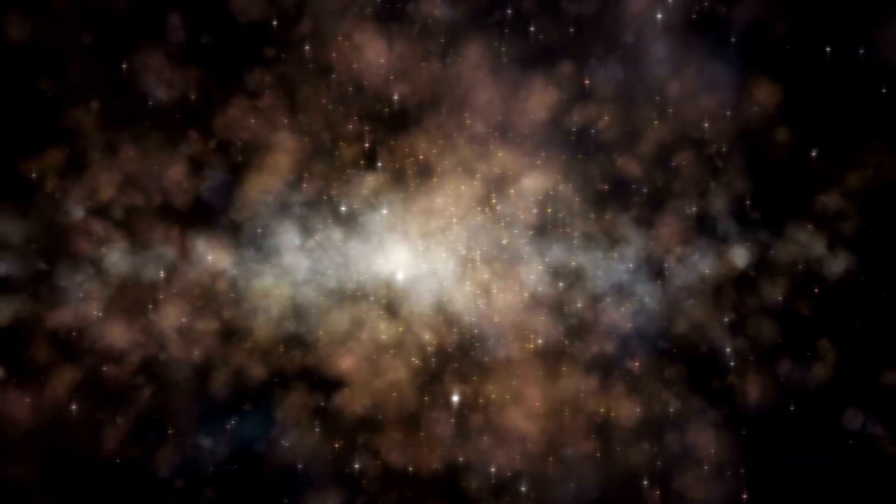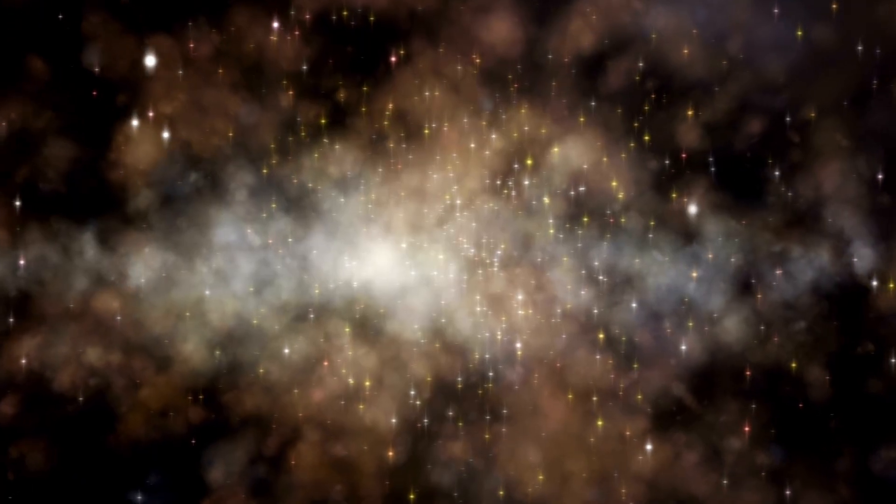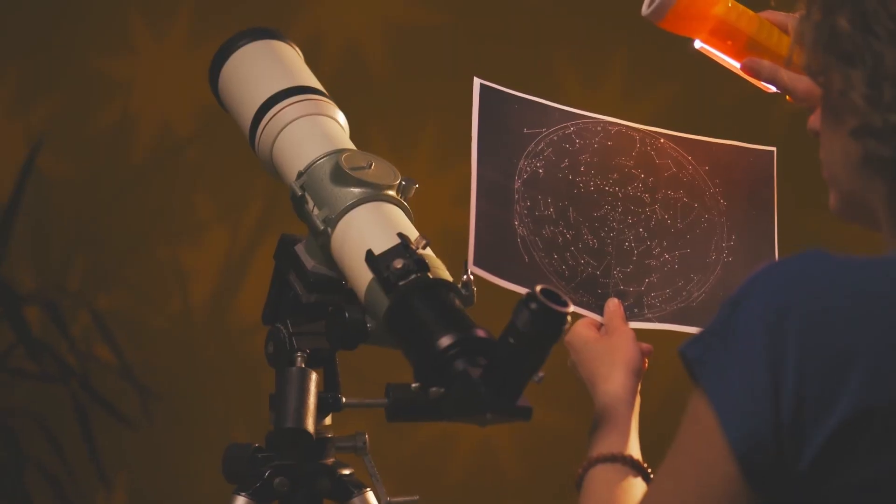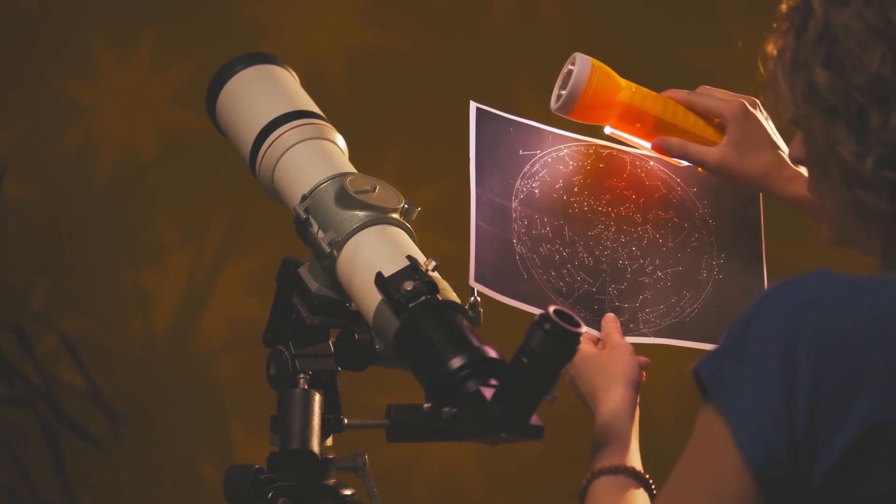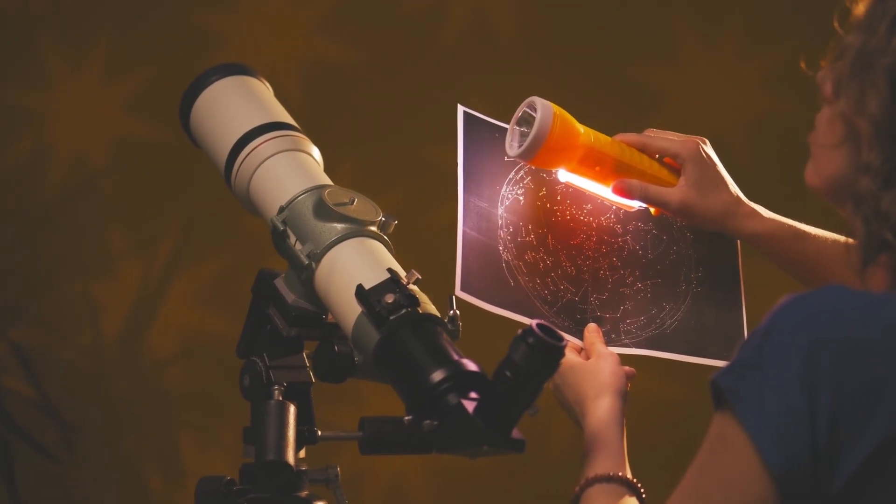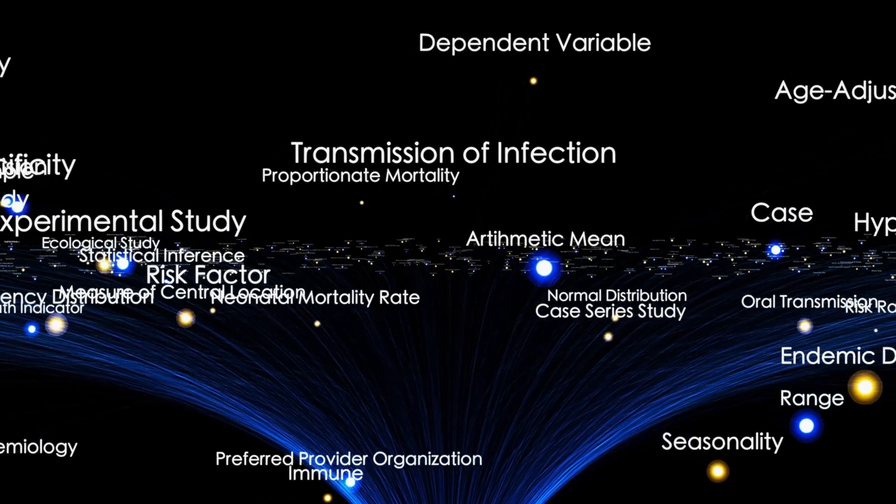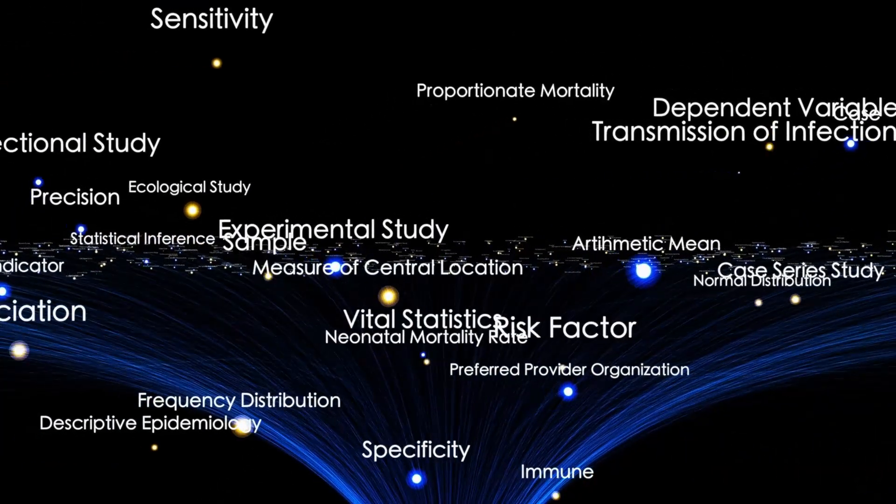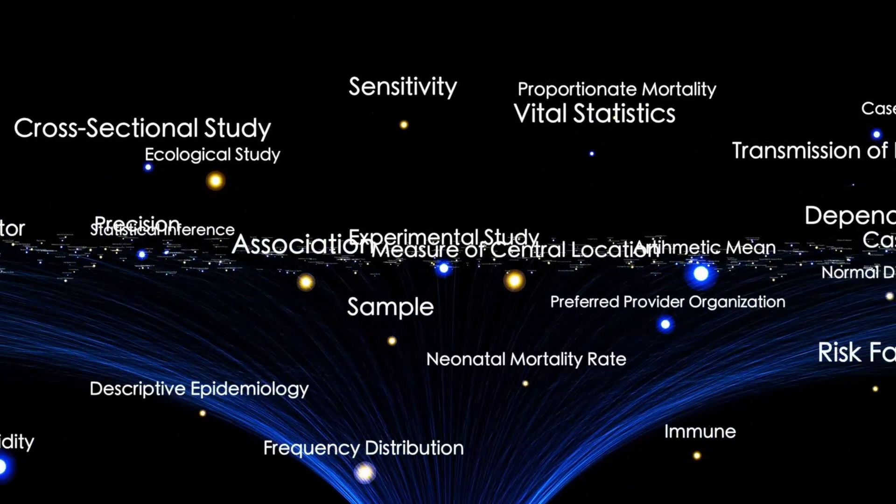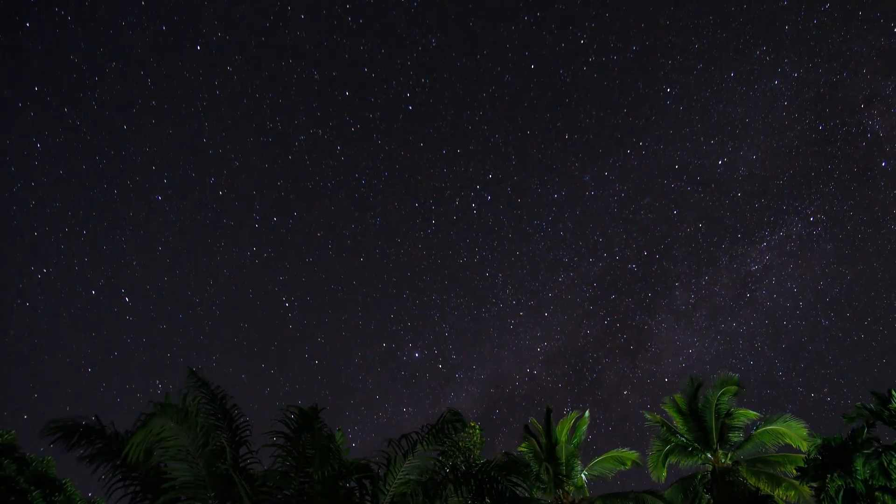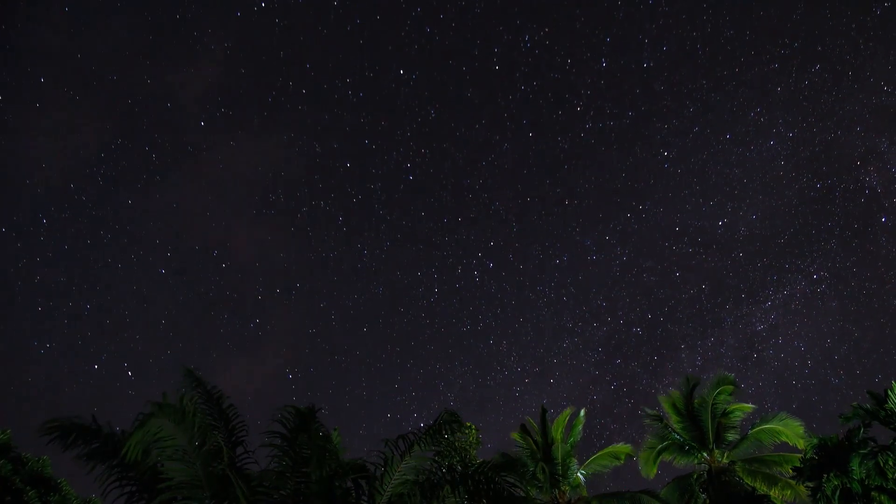But the numbers tell a more complicated story. At its current mass, 3I Atlas carries the impact energy of 2 million megatons of TNT. That's enough to shatter crust, vaporize ice, and launch a shockwave across the thin Martian atmosphere. The debris plume alone could hurl dust and rock into interplanetary space, some of it with enough velocity to cross the gulf to Earth. So while Mars might take the brunt, the aftershocks could ripple far beyond the red planet.